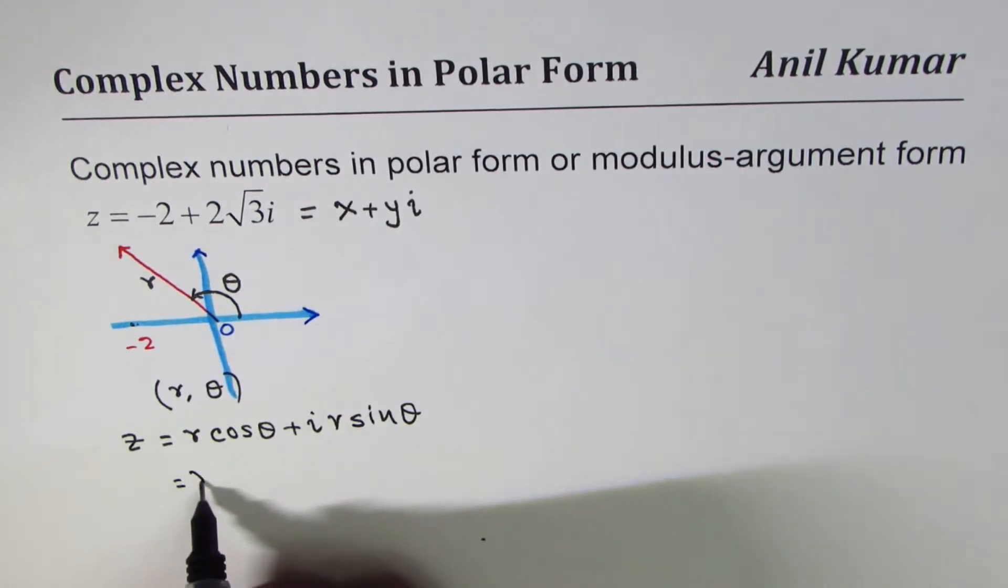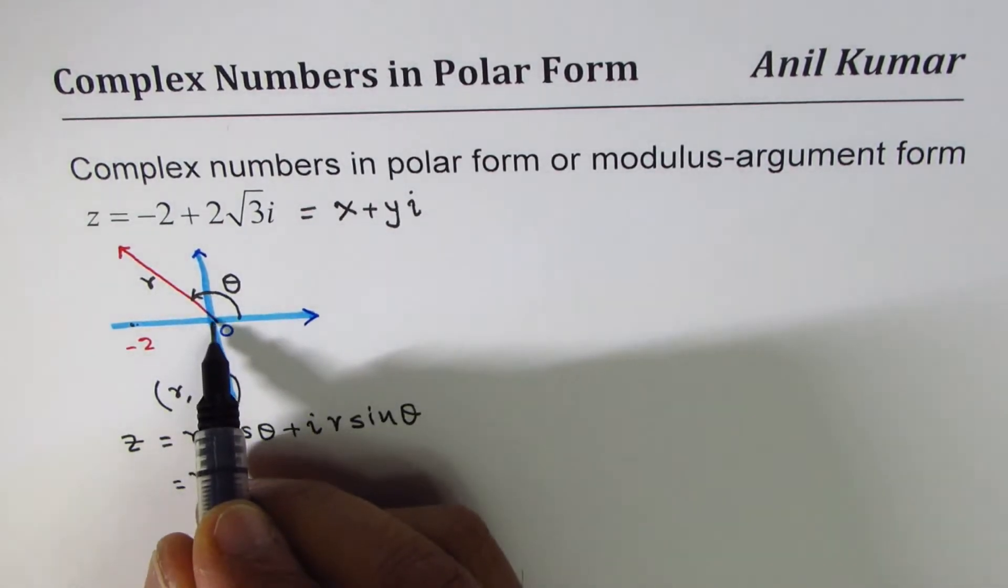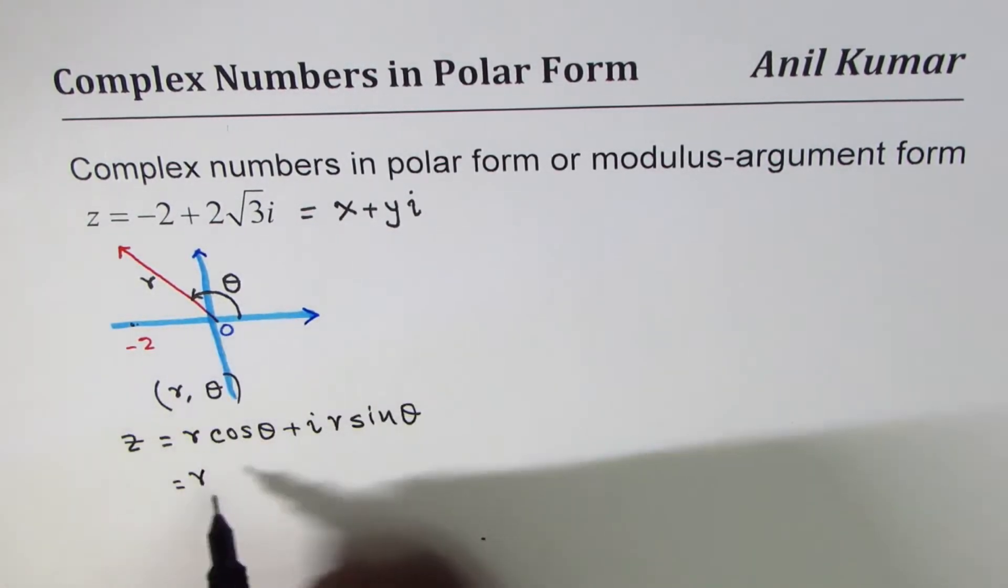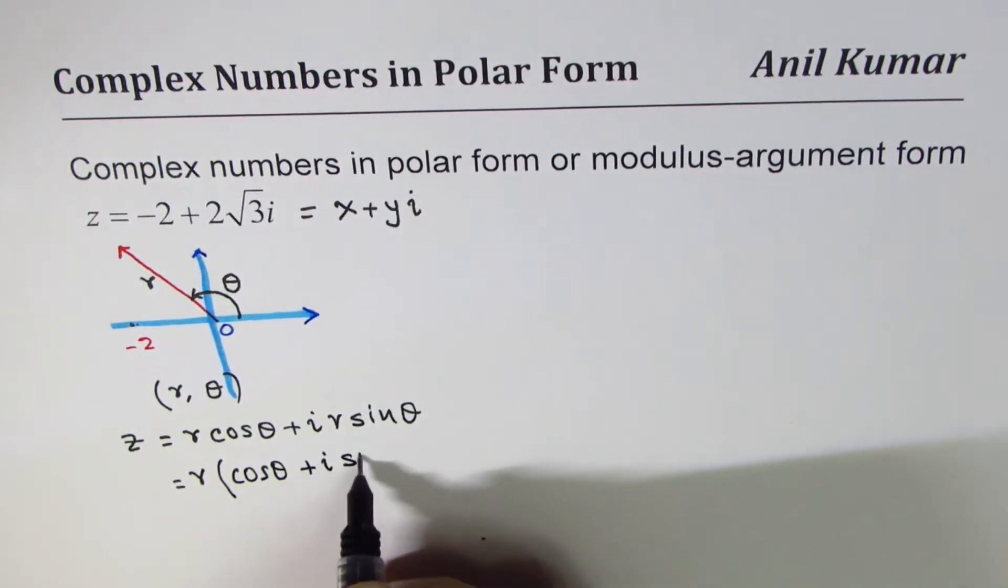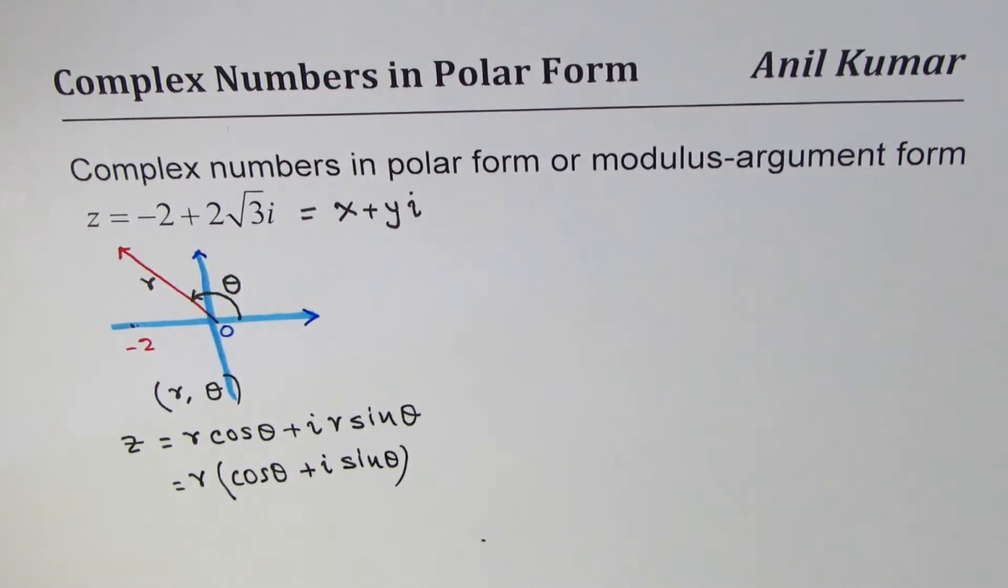It is always better to take r common, so that becomes the distance away from the pole, and then what you get is cos theta plus i sine theta. So that becomes the familiar polar form.